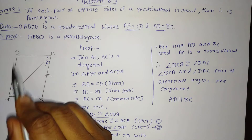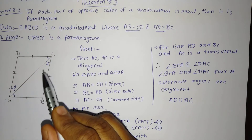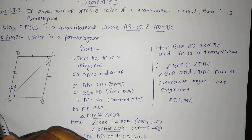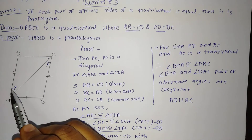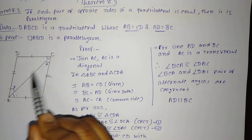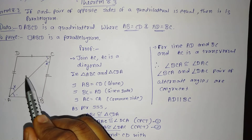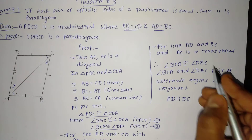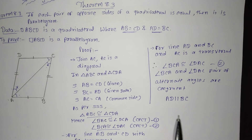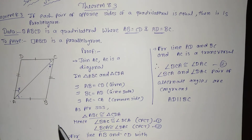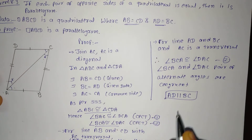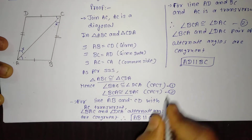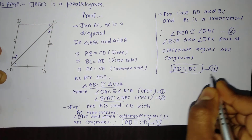To summarize: AD and BC are two lines and AC is the transversal. The alternate angles (angle BCA and angle DAC) are congruent as per equation 2. Since alternate angles are congruent, both lines are parallel. So we get: AB is parallel to CD — equation 3, and AD is parallel to BC — equation 4.